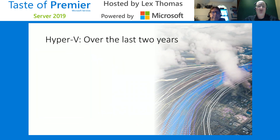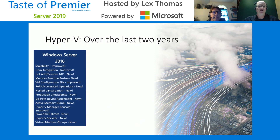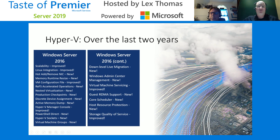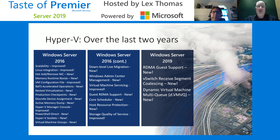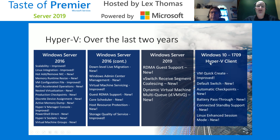Also part of that hyper-converged infrastructure, we've made improvements to Hyper-V over the last few years. In 2016, scalability was improved, Linux integration was there, you could hot add and remove NICs, nested virtualization was new, and PowerShell Direct was in there. We kept introducing new things and improving various services through 2016. In 2019, we're looking at RDMA guest support, the virtual switch received segment coalescing, and dynamic virtual machine multi-queue. Also in Windows 10 for the Hyper-V client, there were improvements including the default switch, automatic checkpoints, and battery pass-through.